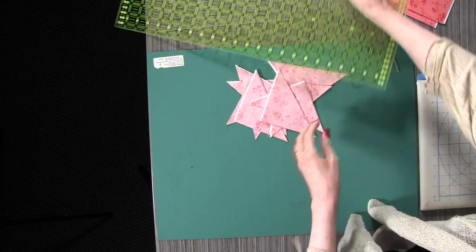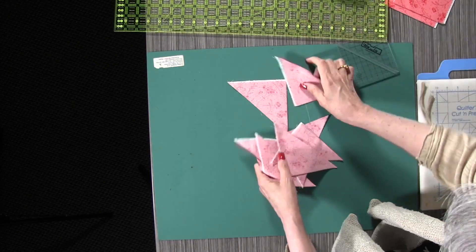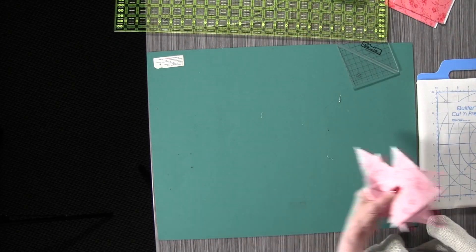Now we're going to press these open and look at that. Make it eight actually gives us eight half square triangles.